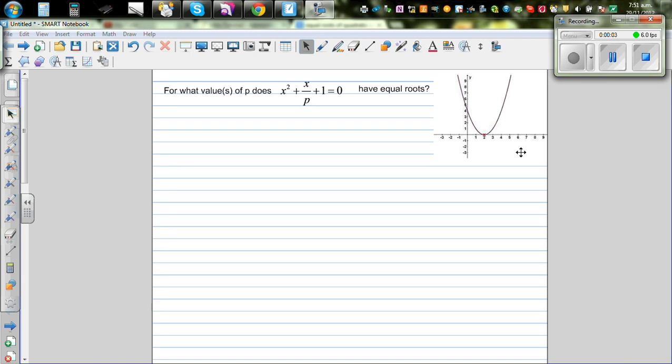For what value or values of p does this equation x squared plus x over p plus 1 equal to 0 have equal roots?